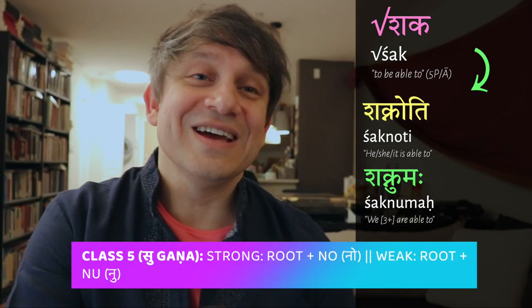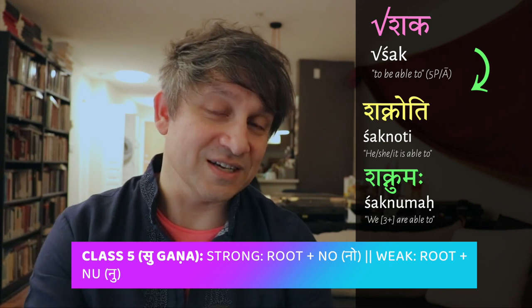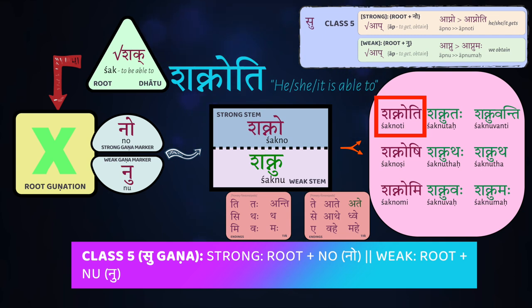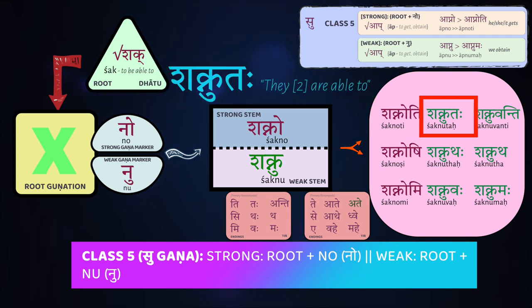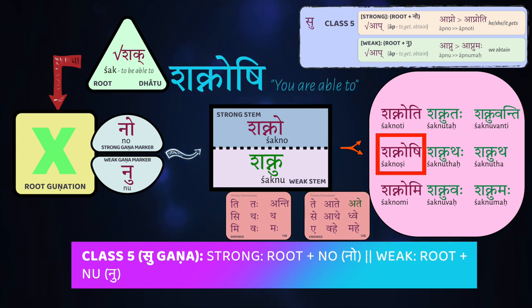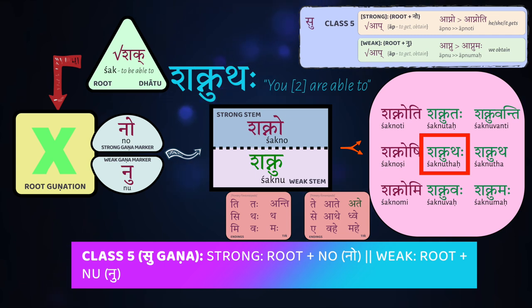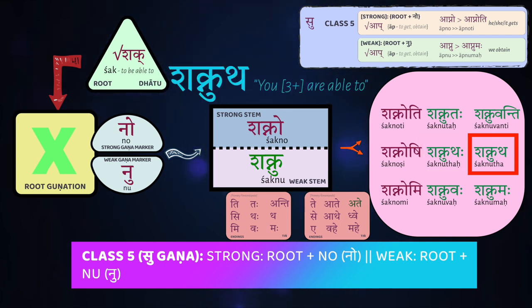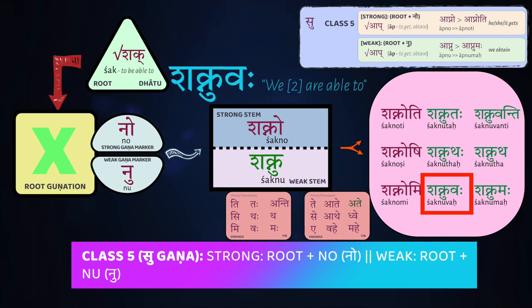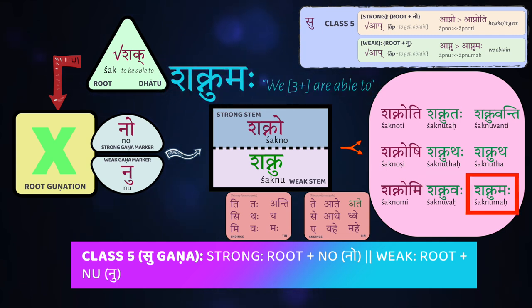Now let's turn to another very similar and equally important fifth-class root you're going to see a lot: śak, which means to be able to do something. Here the strong stem is śak-no and the weak stem is śak-nu. So we get śak-no-ti (he/she/it is able to do something), tau śak-no-taḥa (the two of them are able), or te śak-nu-vanti (they three or more are able). For second person, the s-sandhi rule applies: tvam śak-no-ṣi (you are able to). Śak-no-thaḥa (you two are able), śak-nu-ta (you three or more are able). Aham śak-no-mi (I am able). Āvam śak-nu-vaḥa (the two of us are able). And vayam śak-nu-maḥa (we are able to do something).